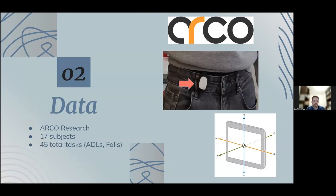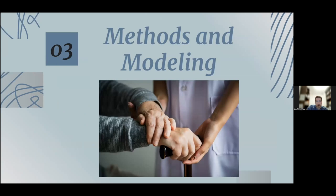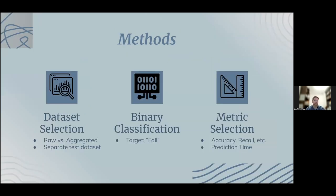The data came from the ARCO research group in Spain — publicly available. They had 17 subjects go through 45 total tests each, including activities of daily living like walking up and down stairs or standing up and sitting down, as well as simulated fall tests. All data was collected by one sensor worn at waist level, able to detect acceleration, rotation, and absolute orientation of the subject — defined in terms of roll, pitch, and yaw. ARCO actually used this research to create a smart mirror in the home.